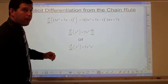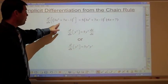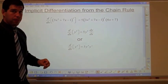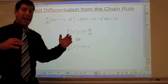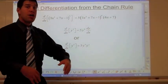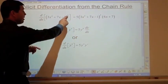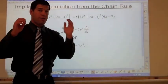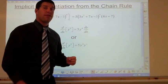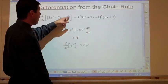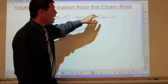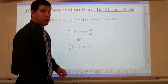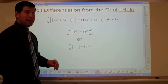For example, if you derive (3x squared plus 7x minus 1) to the fifth, you would use the chain rule. You have an outside function — something to the fifth — and an inside function. Derivative of the outside times derivative of the inside: 5 times this function to the fourth, multiplied by the derivative of what's inside, which is 6x plus 7.